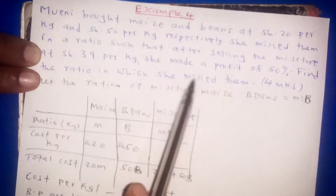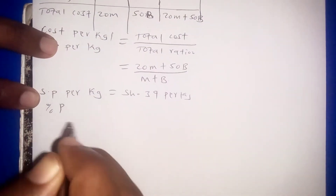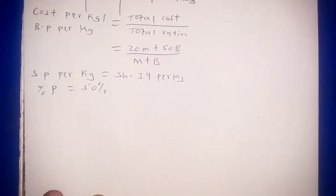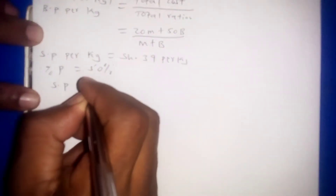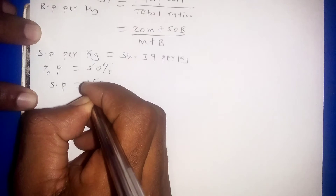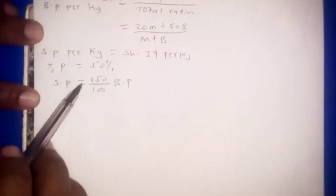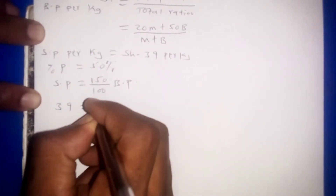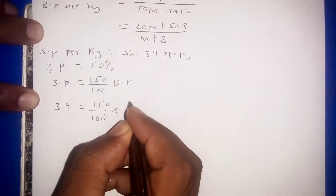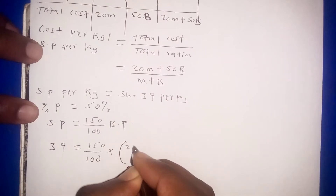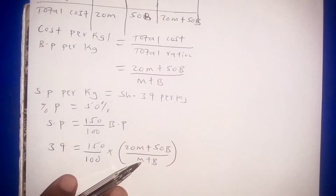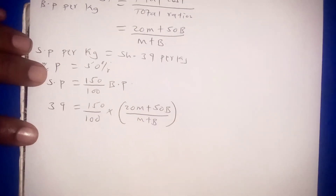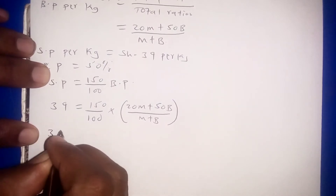The percentage profit is 50 percent. We know that selling price equals 150 percent of the buying price. So 39 equals 150 over 100 times the buying price, where the buying price is (20M + 50B) divided by (M + B).